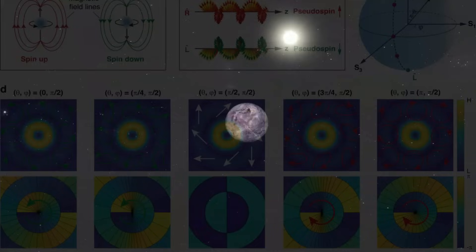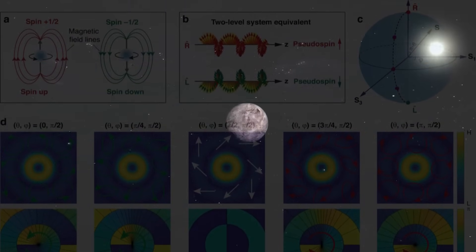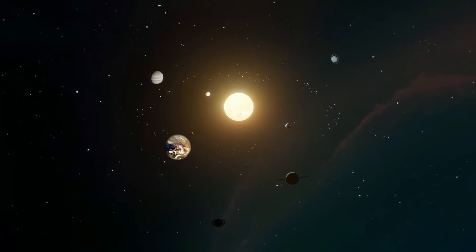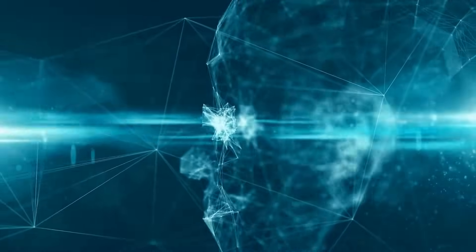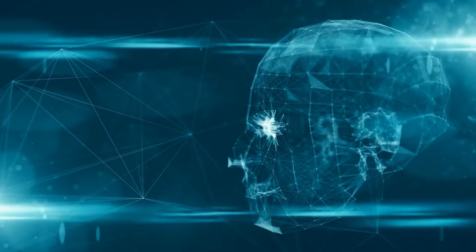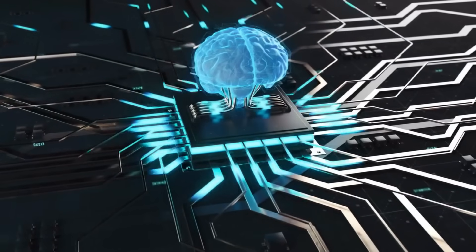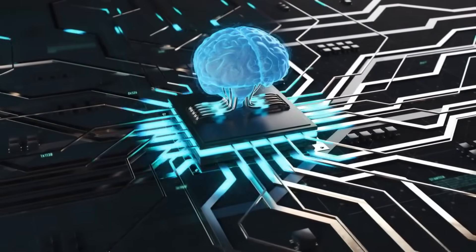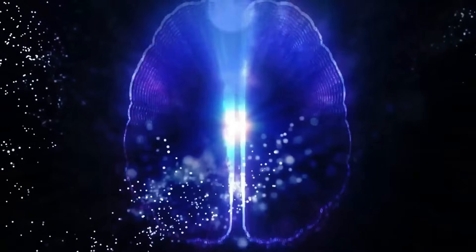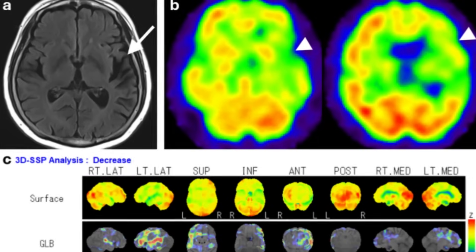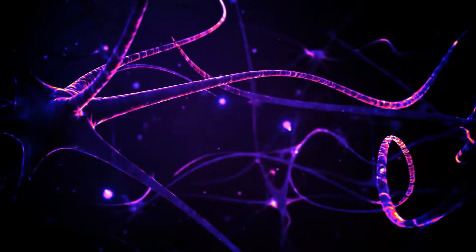The similarities are striking. Proxima b's field generates oscillations in the 8 to 12 hertz range, identical to human alpha waves associated with relaxed awareness. Even more compelling, these patterns show the same clustering and self-organization properties as neural networks processing information. These aren't just vague similarities. The quantum AI system detected signature patterns that match those seen during information integration in biological brains, with correlation coefficients exceeding 78%.